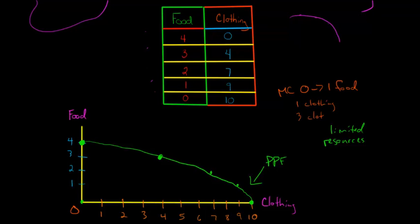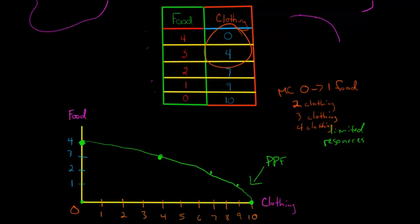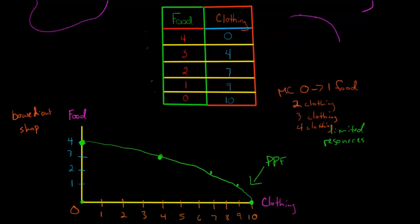Notice that pattern. We give up one clothing to get the first food, two clothing to get the second food, three clothing — that's seven minus four — to get the third food, and then we give up four clothing to go from three food to four food, ending up at zero clothing. That's why the PPF, as we've drawn it here, has this bowed-out shape — because of increasing opportunity cost, or increasing marginal cost.